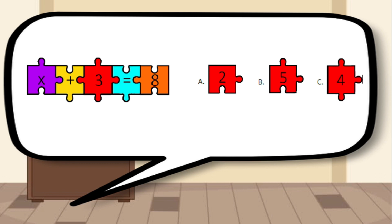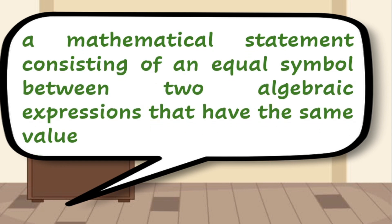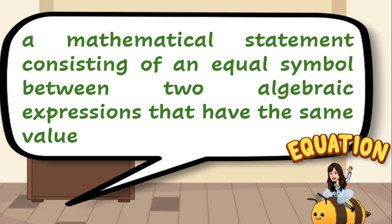We will just find the number represented by a variable that will make an equation true. Before we proceed in learning how to solve linear equations, let us first recall the following terms. Number 1: in algebra, it is defined as a mathematical statement consisting of an equal symbol between two algebraic expressions that have the same value. The correct answer is equation.